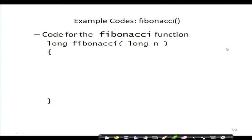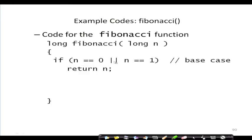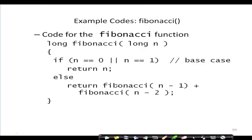The code for the Fibonacci sequence has a very important base condition: if n is 0 or n is 1, return 1. This is the base case — unless we reach this point, we cannot compute the entire solution. Otherwise, return Fibonacci(n-1) + Fibonacci(n-2). That is the code for the Fibonacci number.